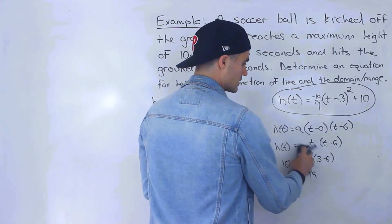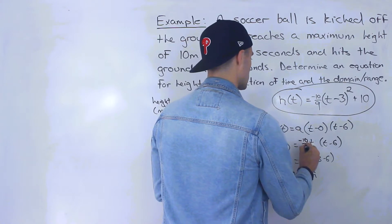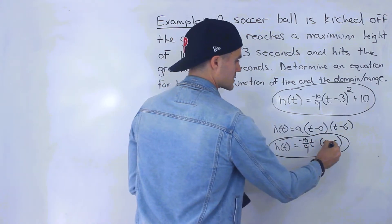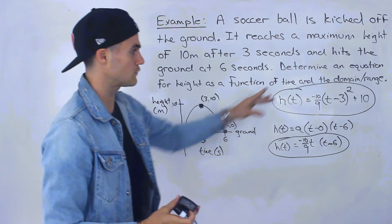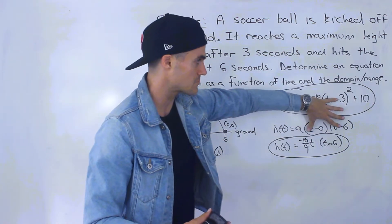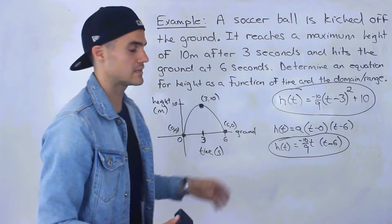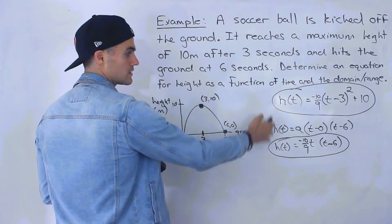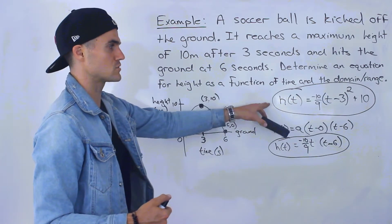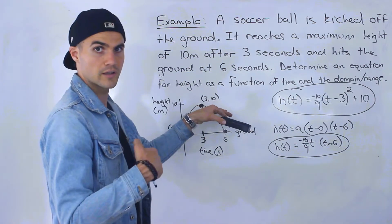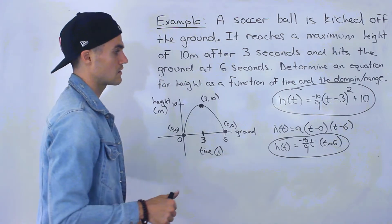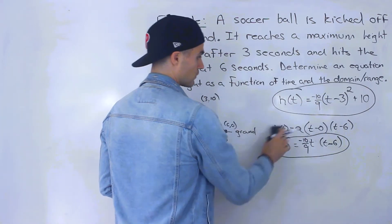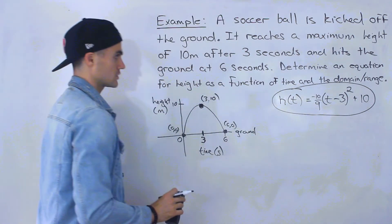Both forms — vertex form and factored form — are correct and equivalent. If you expand either one, you get the same expression. Personally, when given a vertex I prefer vertex form. Either equation is a valid answer for the first part: an equation for height as a function of time.